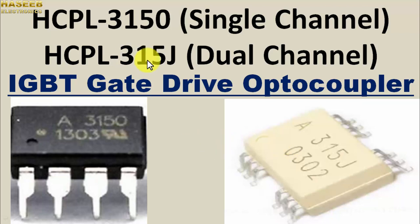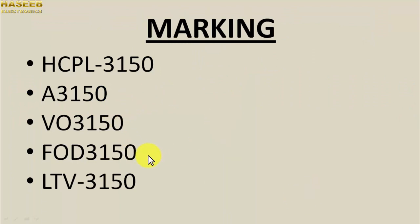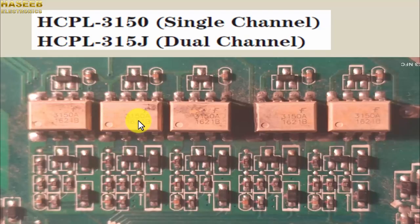In this video we will discuss HCPL-3150 or HCPL-315J. It is a single channel or dual channel IGBT gate drive component with 0.5 ampere current. It is an optocoupler whose output section is used to drive IGBT gates. At the IGBT stage we use high voltage, and on the low side any microcontroller or TTL logic level is used, so it provides isolation between the high voltage line and low voltage line. Marking numbers include HCPL-3150, A3150, VO3150, FOD3150, or LTV3150 — the generic number is 3150.